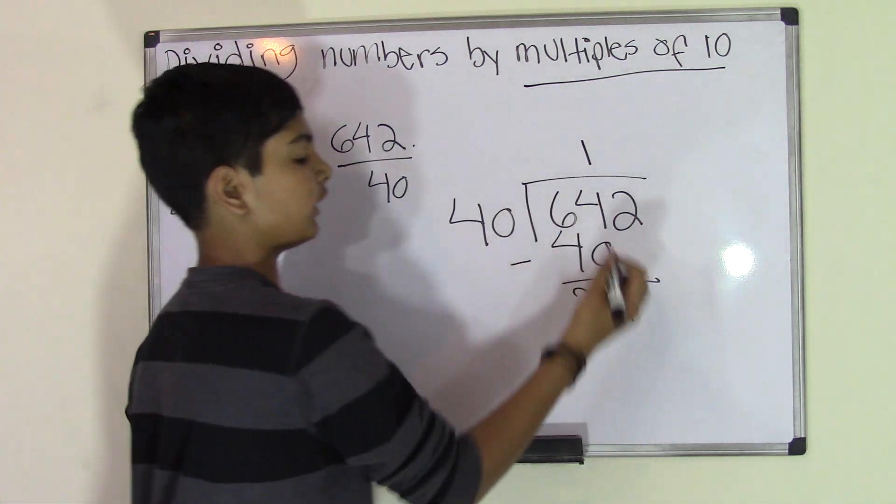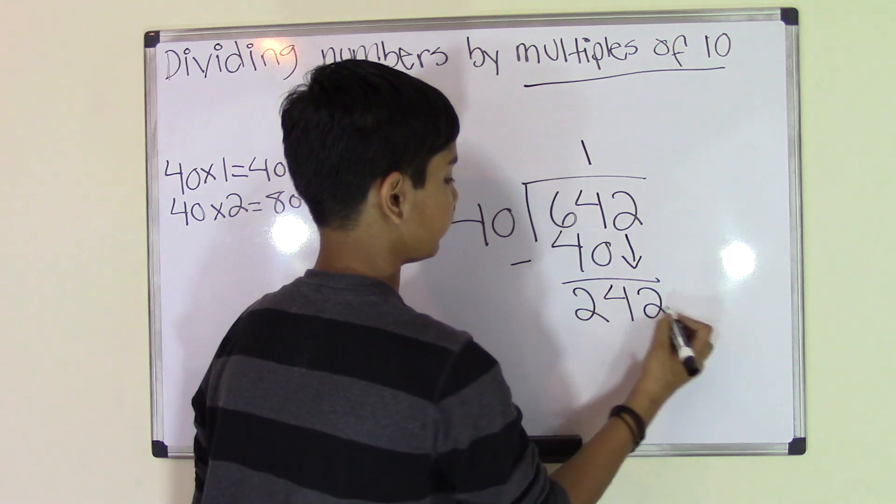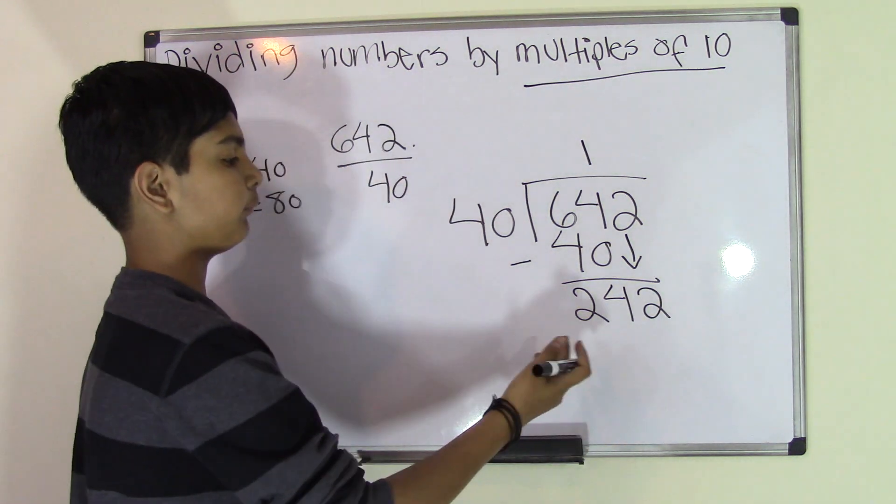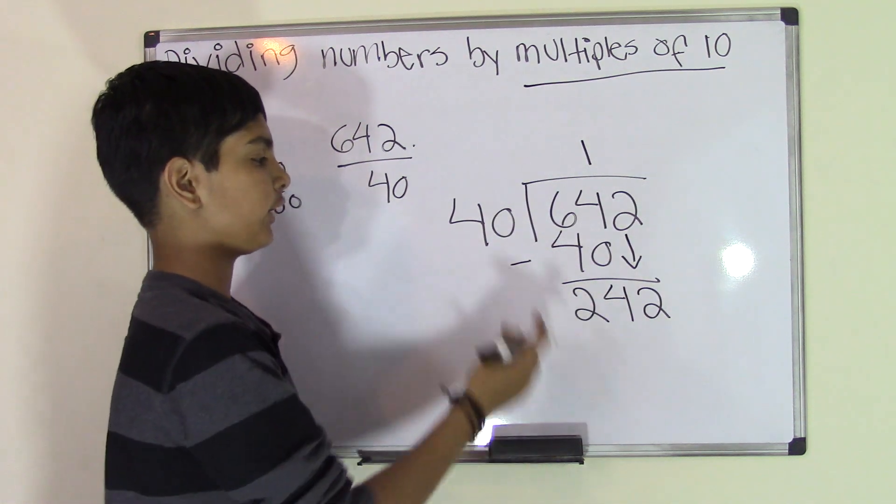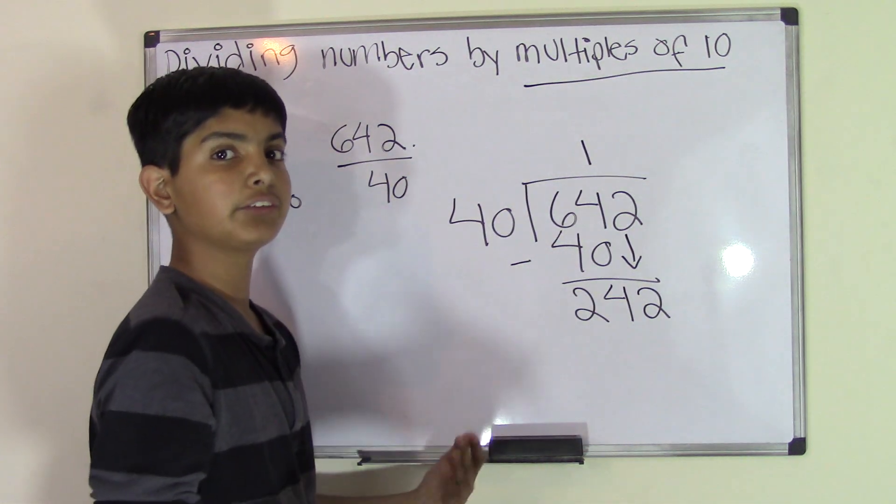Now we get an answer of 24. 24 is less than 40. Now what do we do? Well, here's where the other number comes in handy. Now we bring down this 2 to increase this number. Now we get the number 242.